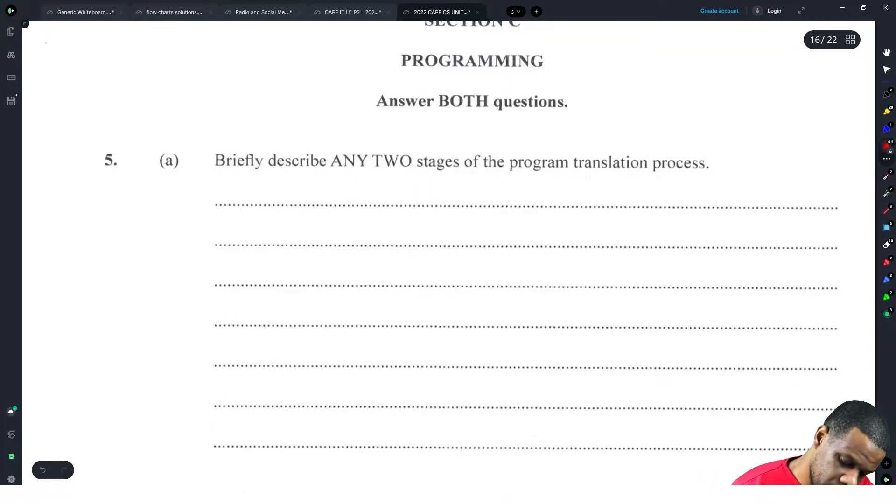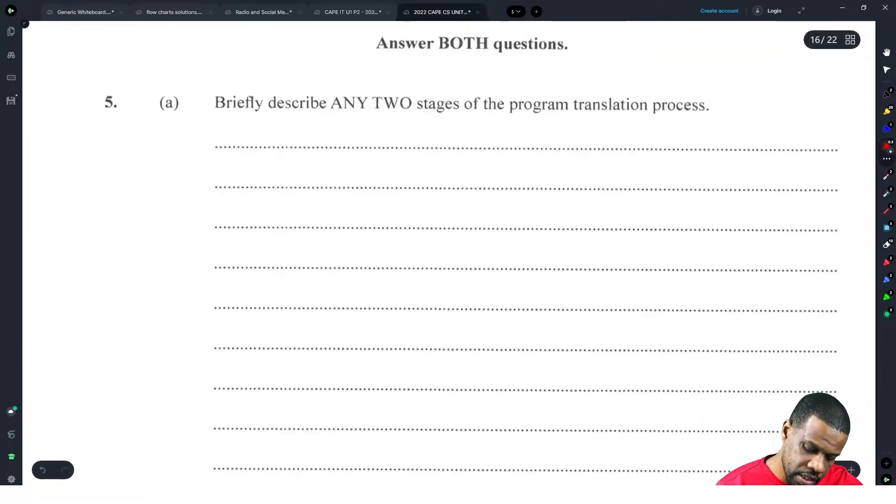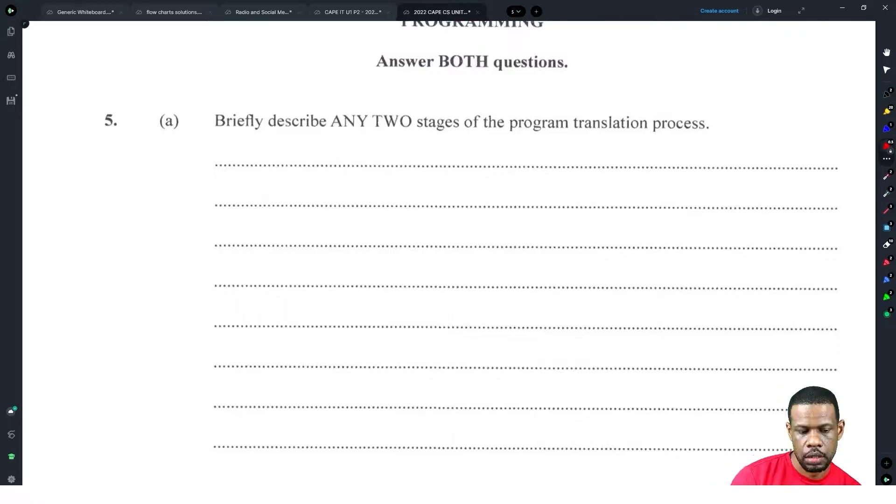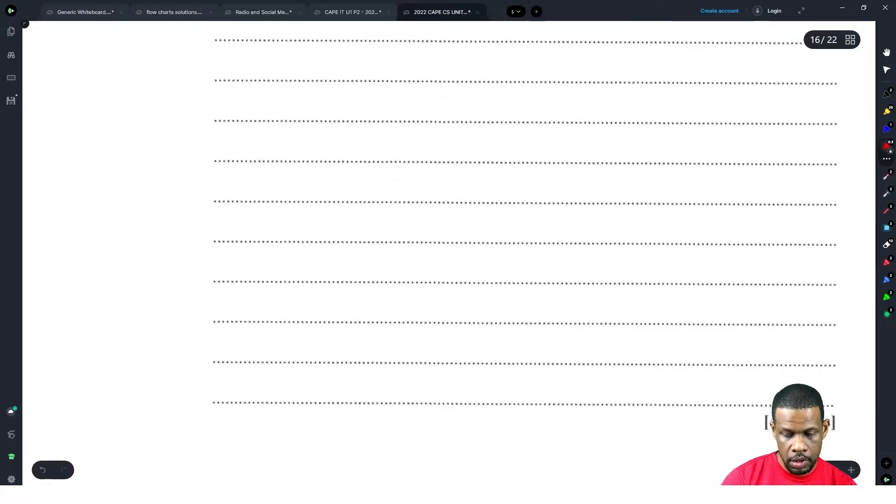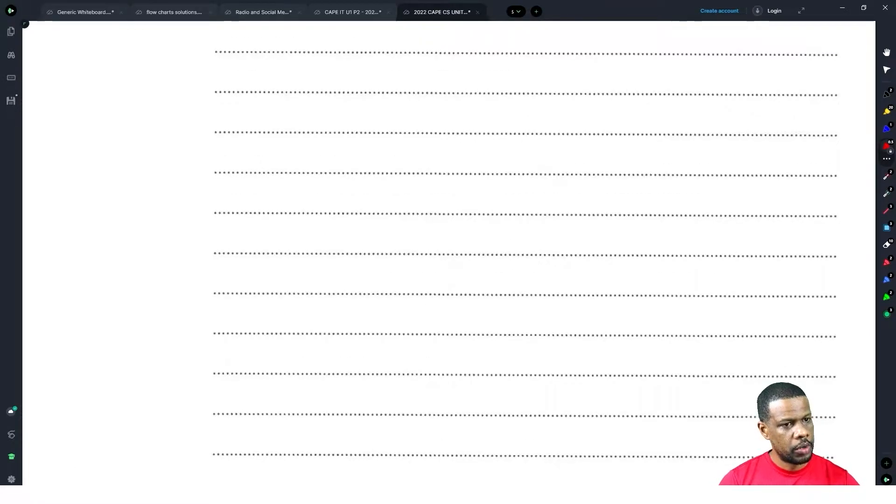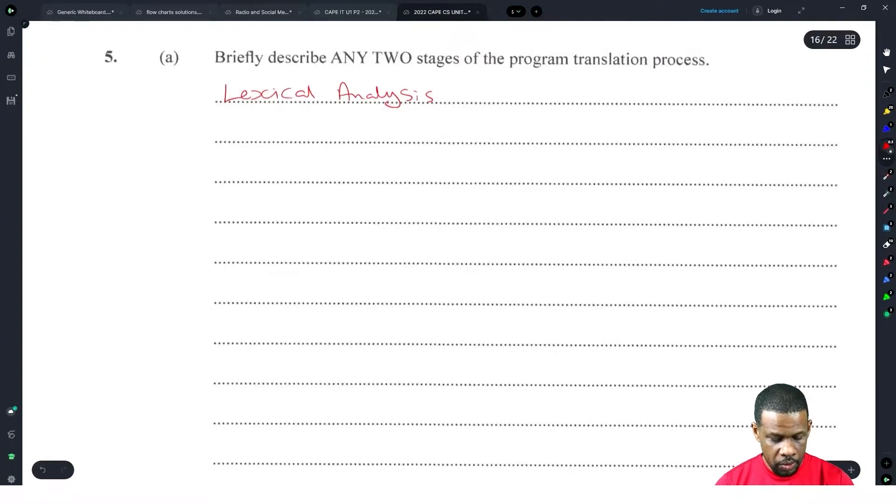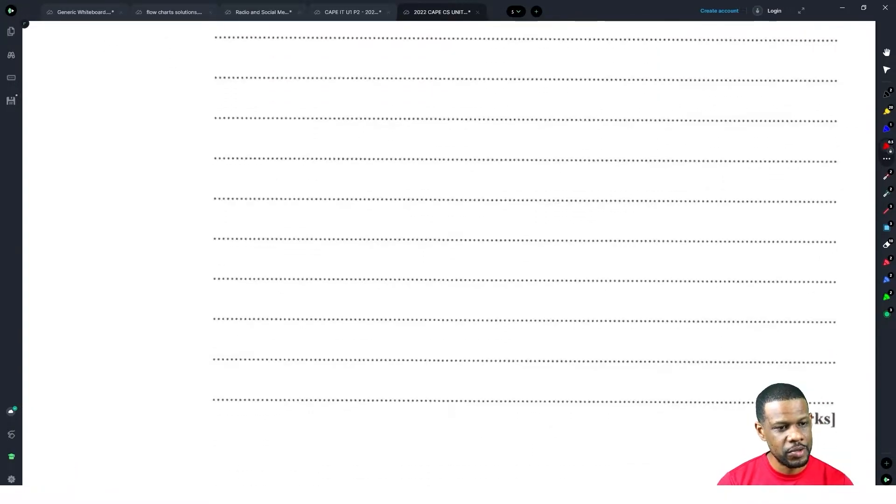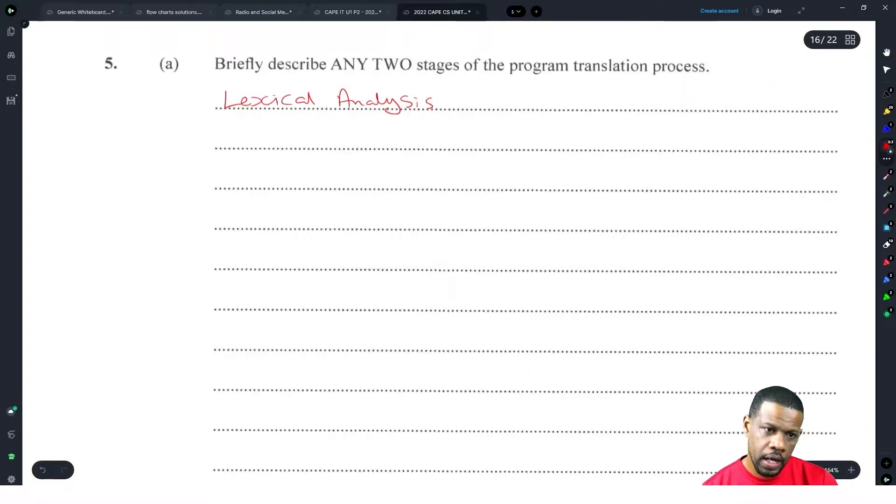Module three: Describe any two stages of the program translation process. Let's go with lexical analysis. There are eighteen lines to write on, but anyway, I'll do lexical analysis.